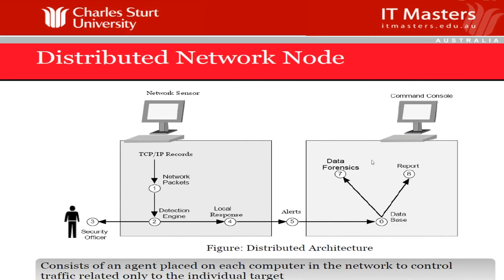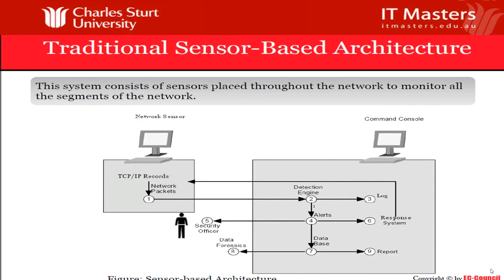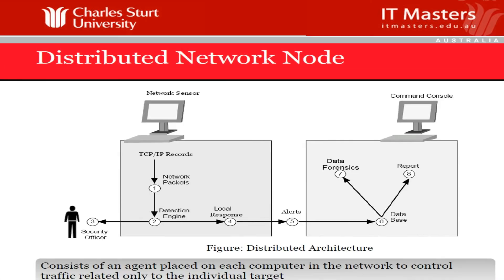In a distributed node architecture, we have network sensors and a command console. Network packets come into the detection engine. If something is detected, it goes to the security officer; if not, it goes to the local response. The distributed network node places an agent on each computer in the network to control the traffic. For a large network like Fujitsu with over 65,000 computers in one location, installing agents on 65,000 computers — plus antivirus, plus this, plus that — can be a lot. You have to decide what kind of IDS/IPS detection method you are going to install.